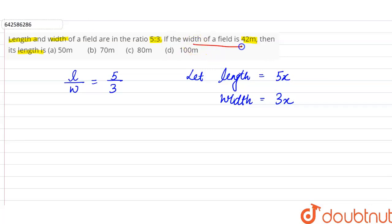So we can say width means 3x, so 3x equals 42 meters, or x will be equal to 42 divided by 3, which equals 14. So we can say that the value of x is 14 meters.